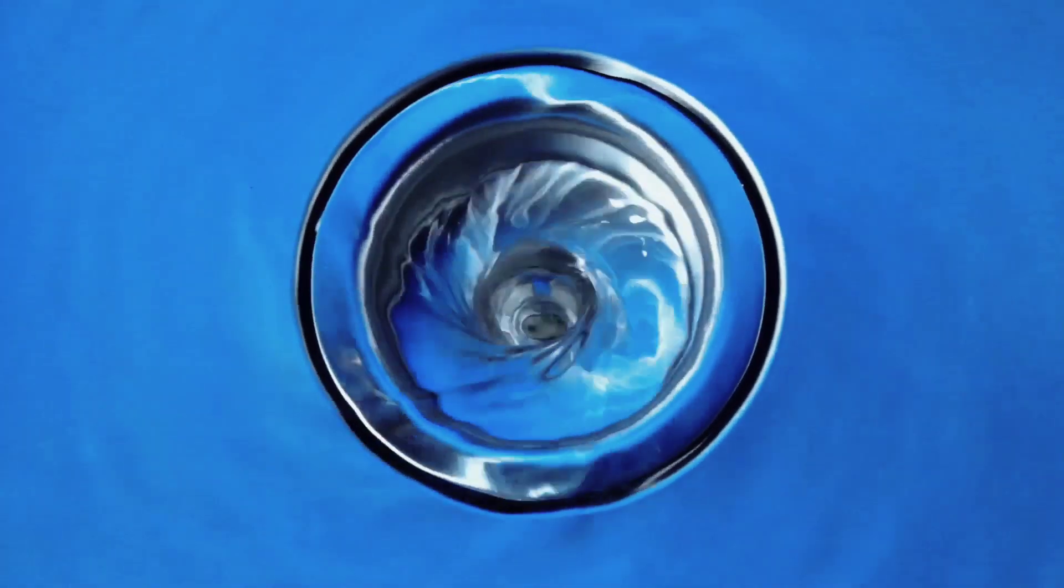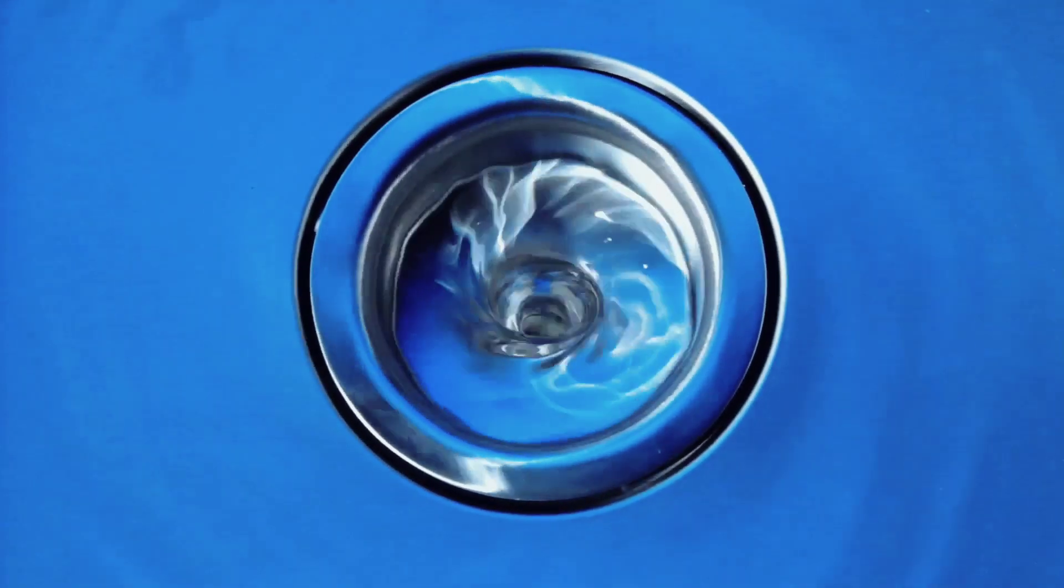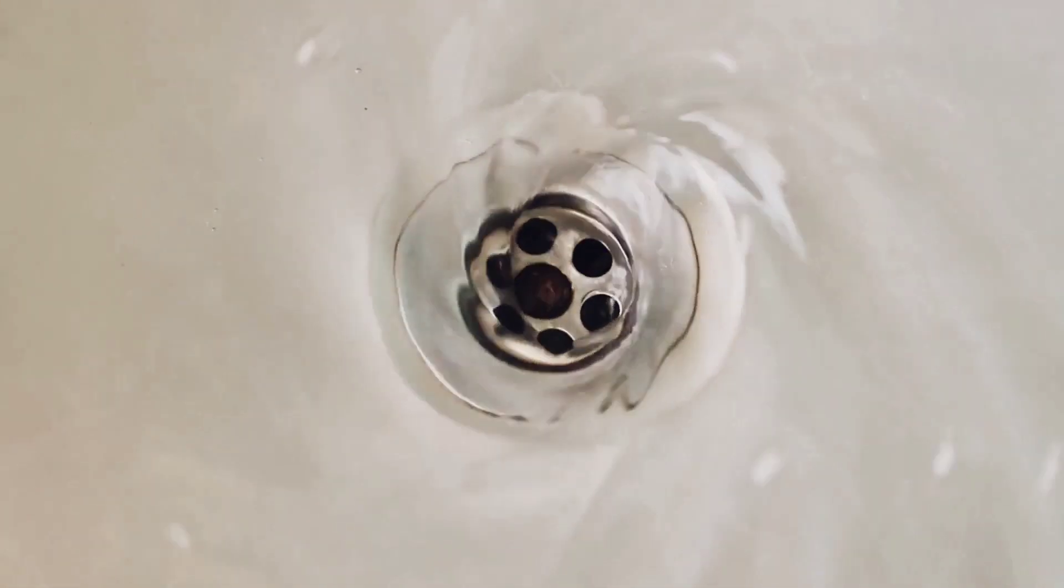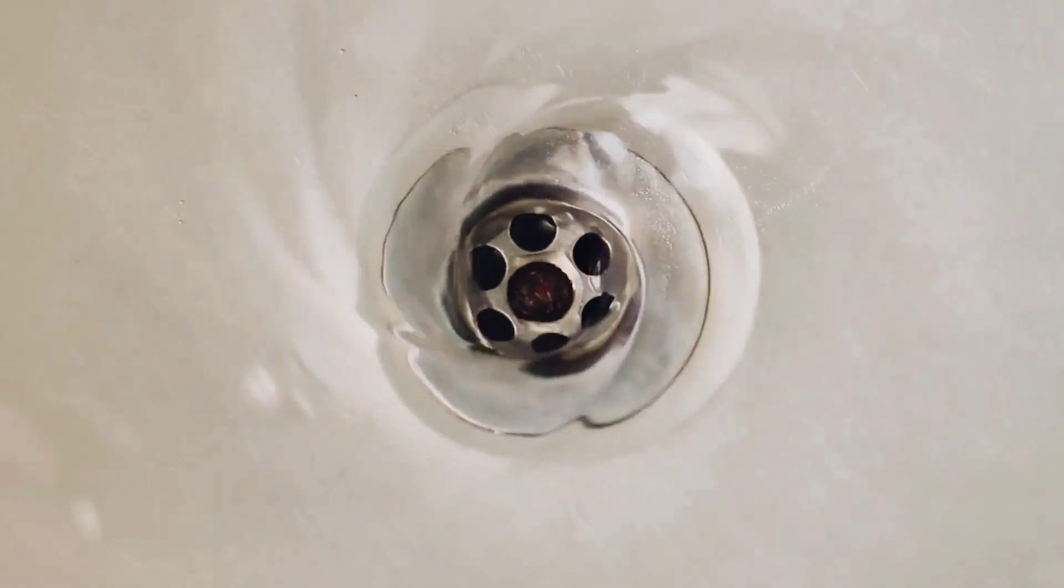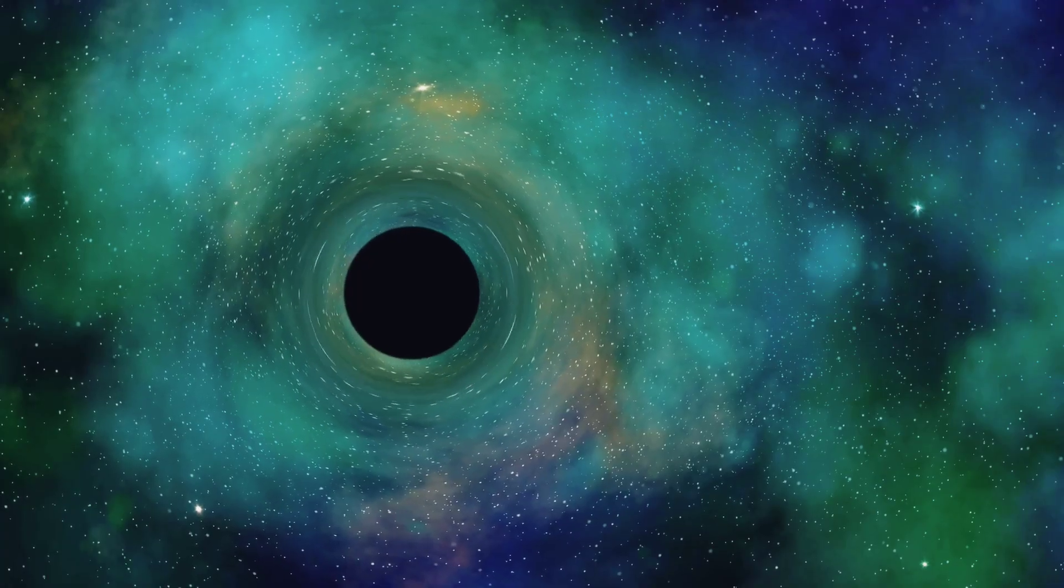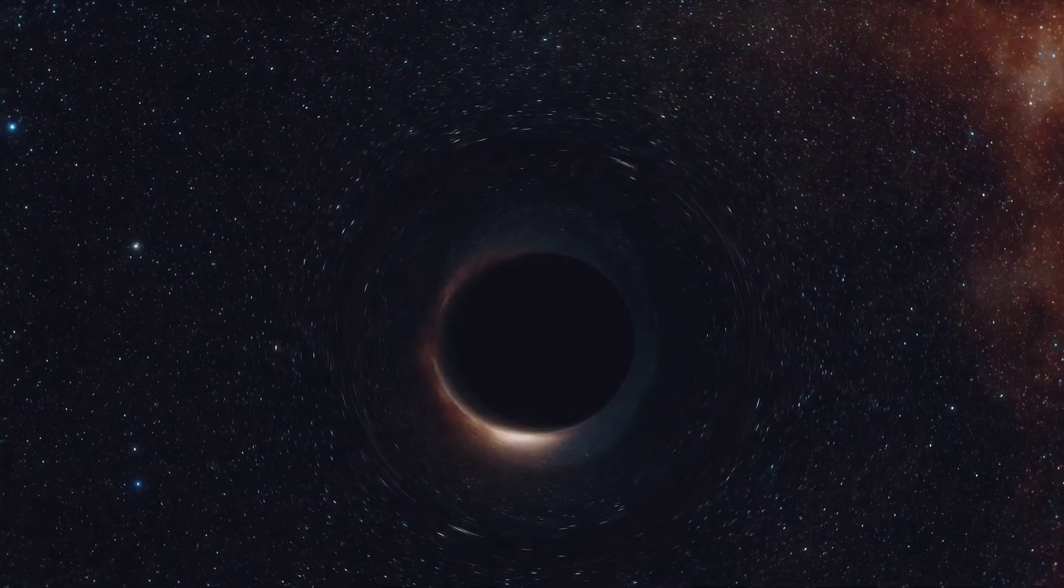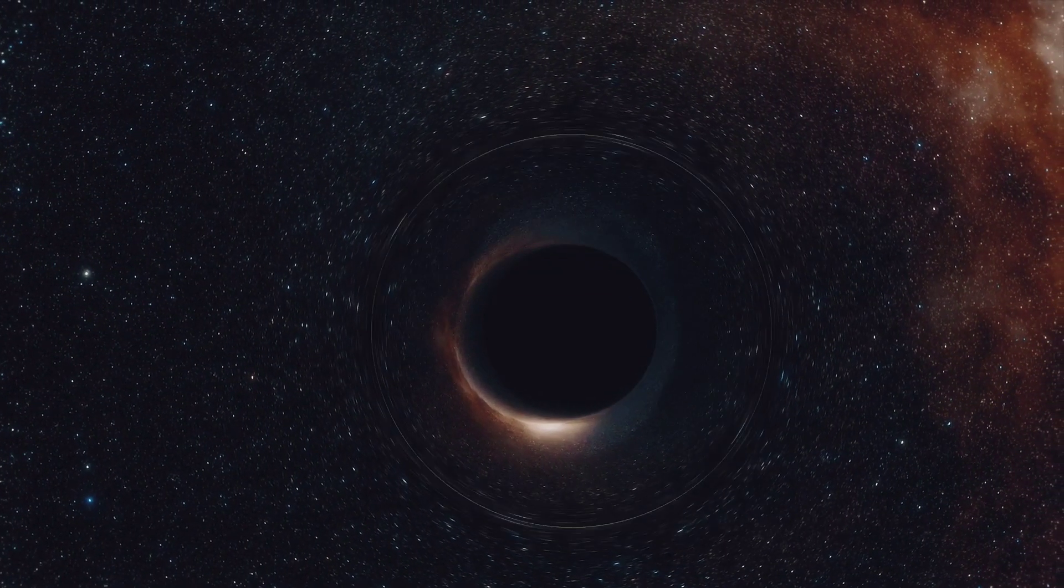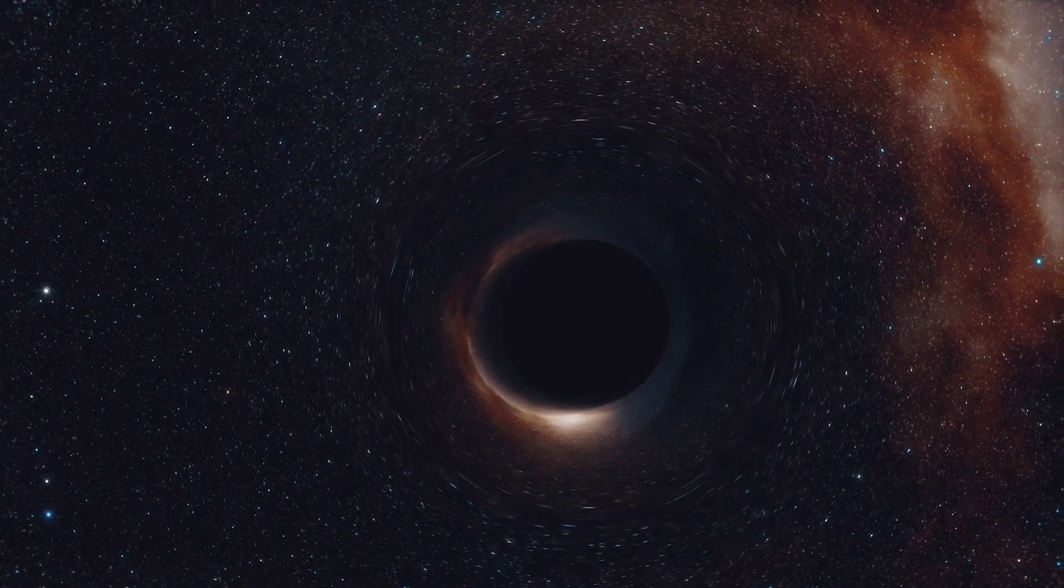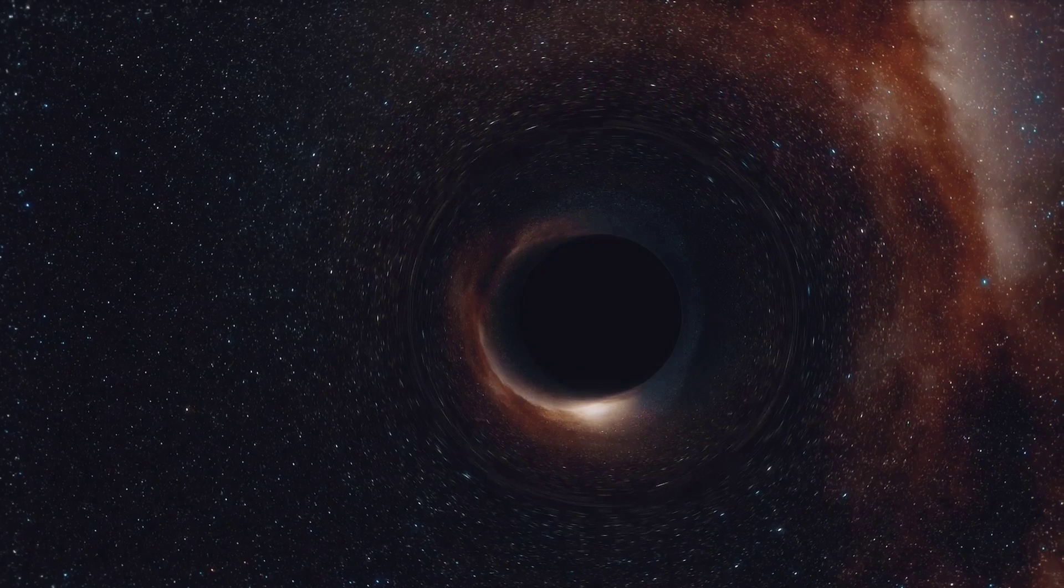Water spirals down faster and faster until it disappears down the drain, seemingly into nothingness. The water, once caught in the whirlpool's grip, can't escape. It's pulled down and down until it's gone. This is not so different from a black hole. At their most basic, black holes are places where matter has been squeezed into such a small space that the force of gravity becomes overwhelming. Anything that gets too close, whether it's a star, a planet, or even light itself, gets sucked in and can't escape.